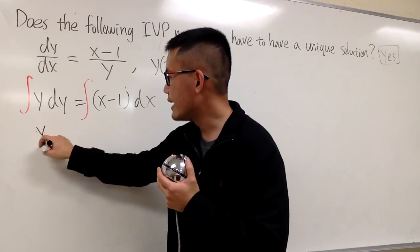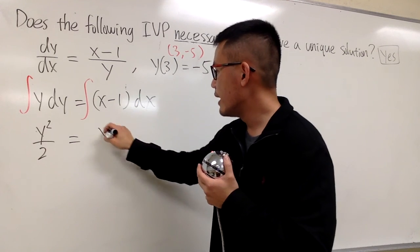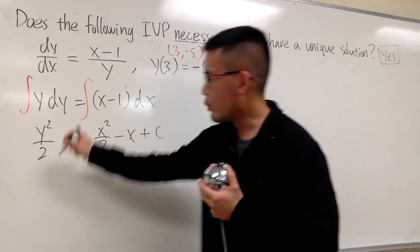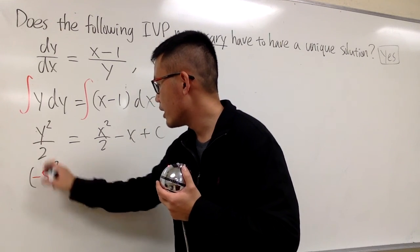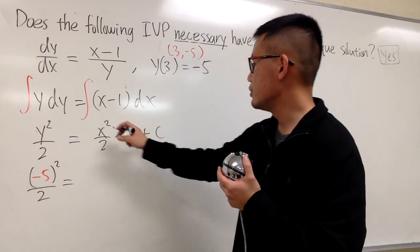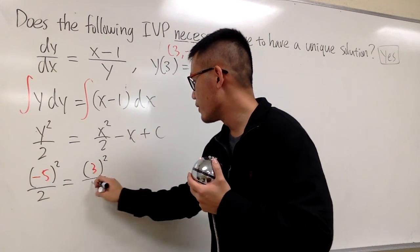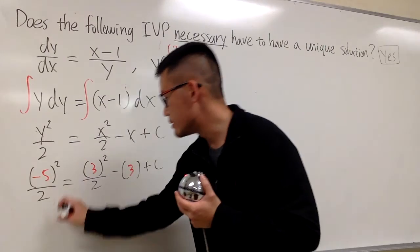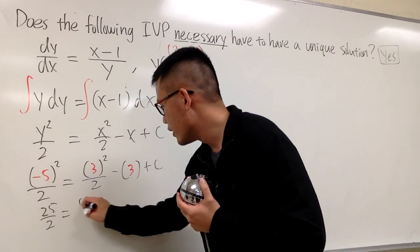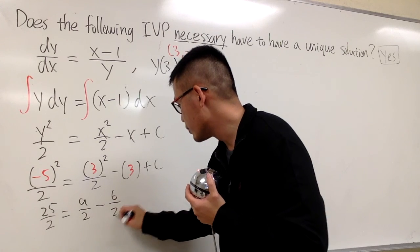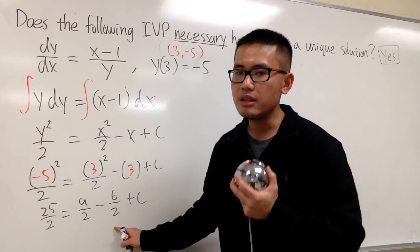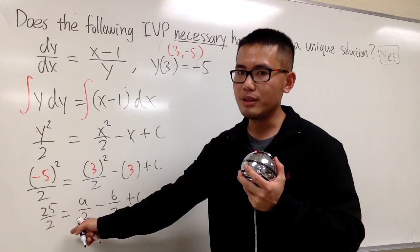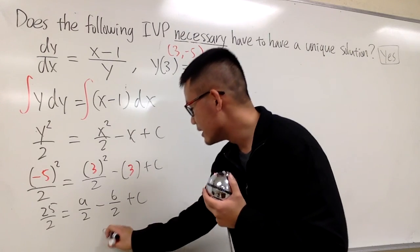Left-hand side, we get y²/2. This is equal to x²/2 - x + c. Plug in -5 into y. So, we have (-5)²/2. And this is equal to plug in 3 to x. We have 3²/2 minus another 3 right here for the x, and plus c. And this is pretty much just 25/2 = 9/2 minus 6/2 plus c. This two together is 3/2. 25/2 - 3/2 is 22/2. That means c will be 11.